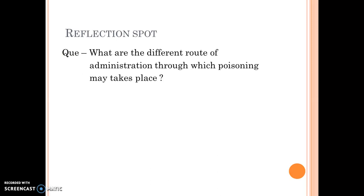Now it's time for the reflection spot. Pause the video and write the answer of the given question in your notebook. The question is: what are the different routes of administration through which poisoning may take place?